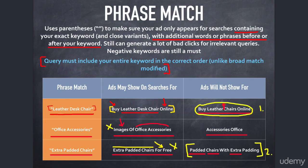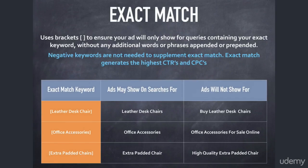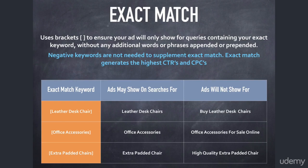So let's talk about exact match. The exact match keyword match type is the most precise and the most controlled type of match type Google AdWords offers, and it totally eliminates the need for negative keywords for exact match keywords. Keep that in mind — when exact match eliminates the need for negative keywords, that's specifically referring to the exact match keywords you have in your account.